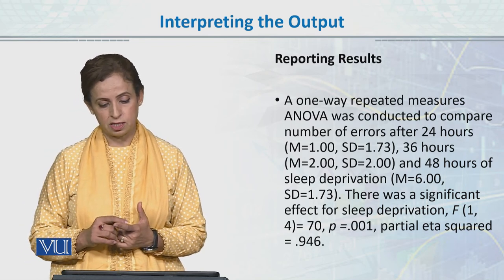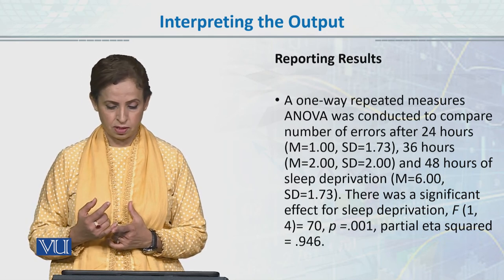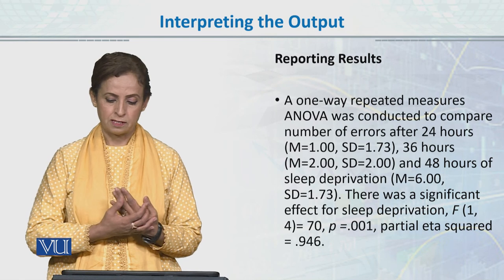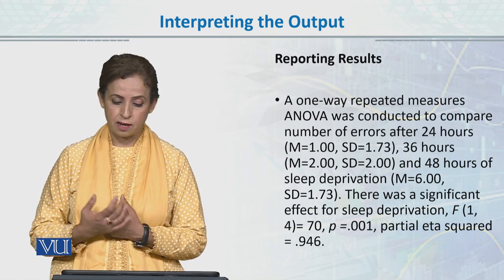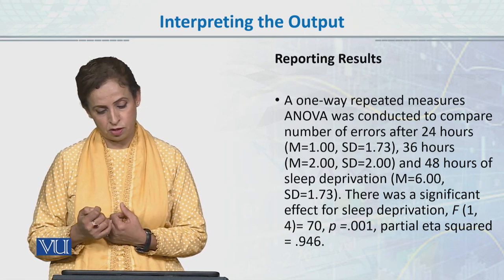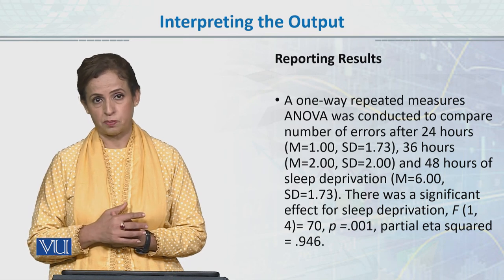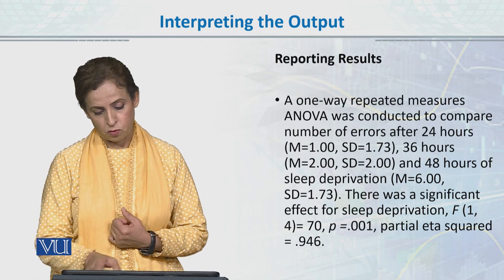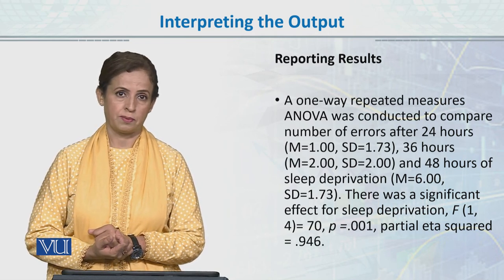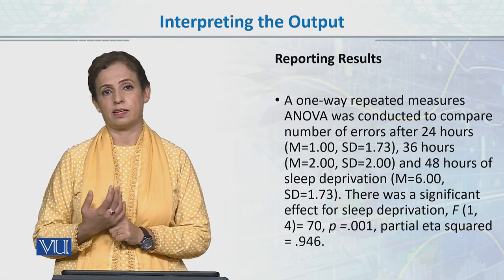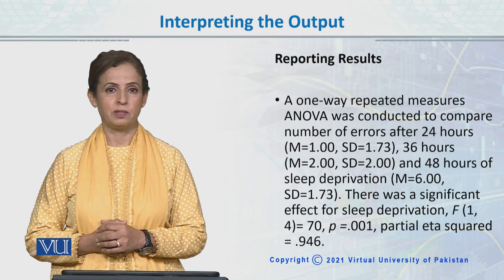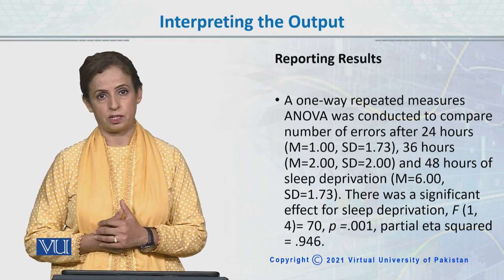Now, how we report results: After 24 hours, we give mean and standard deviation. After 36 hours, mean and standard deviation. After 48 hours sleep deprivation, the number of errors increased. There was a significant effect for sleep deprivation. You will give F value - F italicized - degrees of freedom for between and within, which is 1 and 4. Because we have 5 total participants, 5 minus 1 would be 4. F(1,4) equals 70, p equals 0.001, and partial eta squared value is 0.946, which means results are significant. There is a significant difference of sleep deprivation on the errors on the motor skill task. This is about repeated measures ANOVA, and we have done one-way repeated measures with one variable.